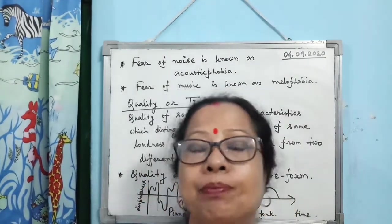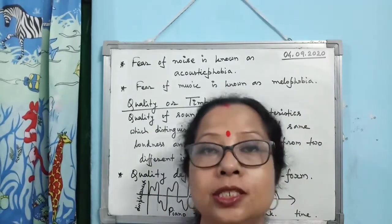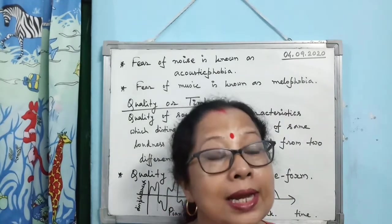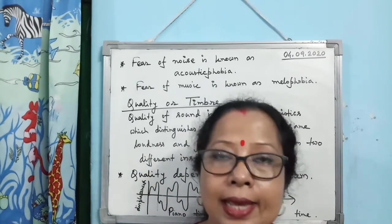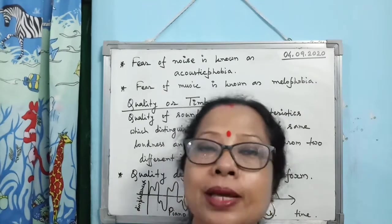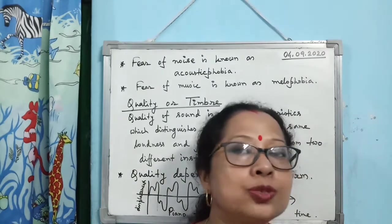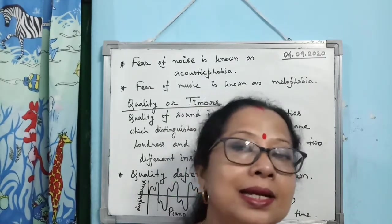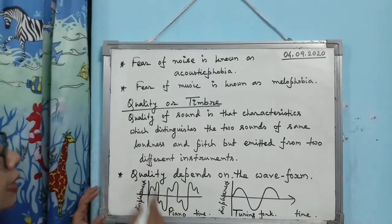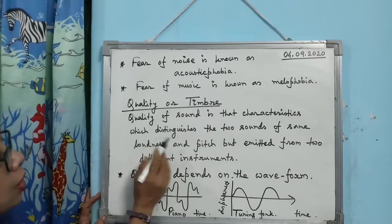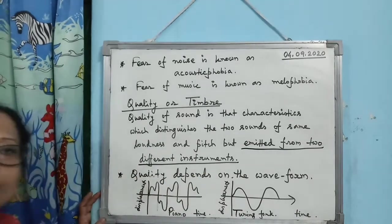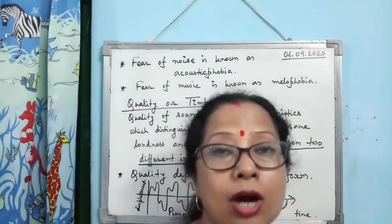Quality or timbre is that characteristic of sound which distinguishes between two sounds of the same loudness and same pitch but produced by two different instruments. For example, you can identify the voices of two girls talking with the same loudness and pitch — the characteristic that differentiates them is quality. It is the characteristic that distinguishes sounds of the same loudness and pitch emitted from two different instruments.